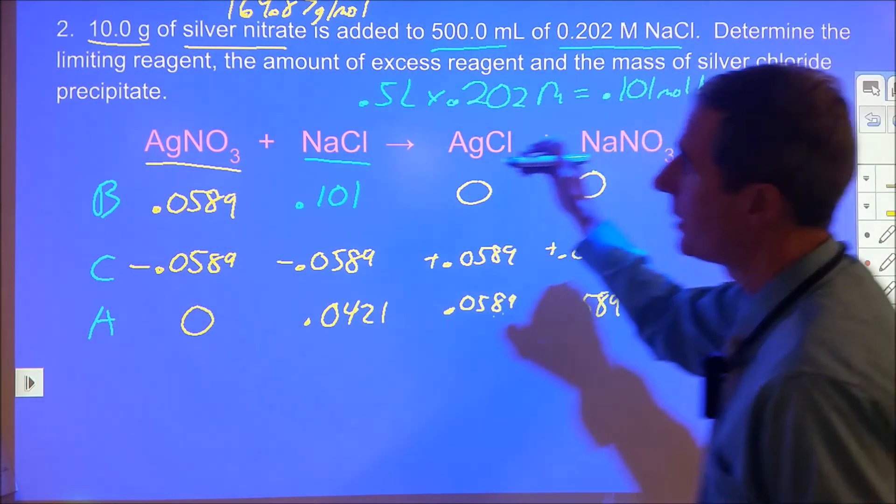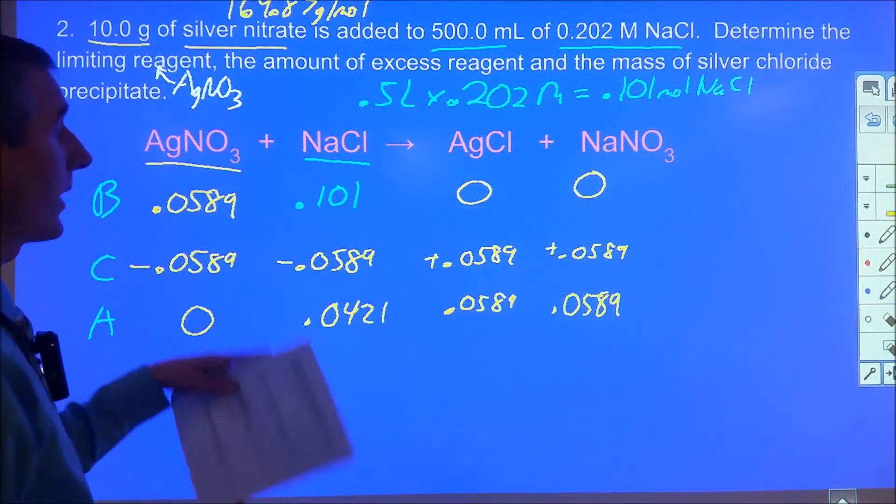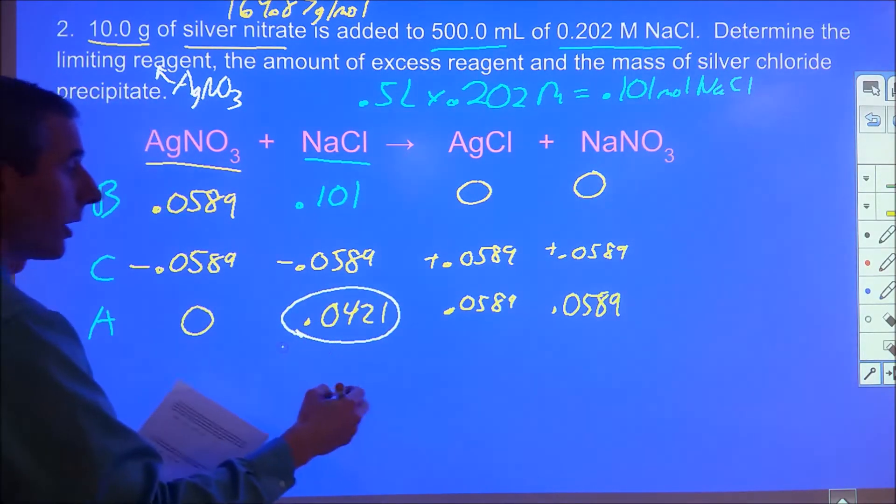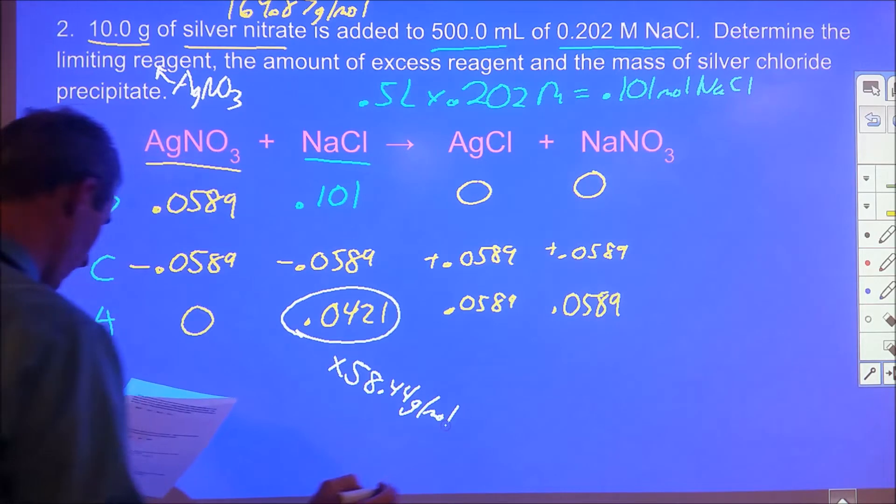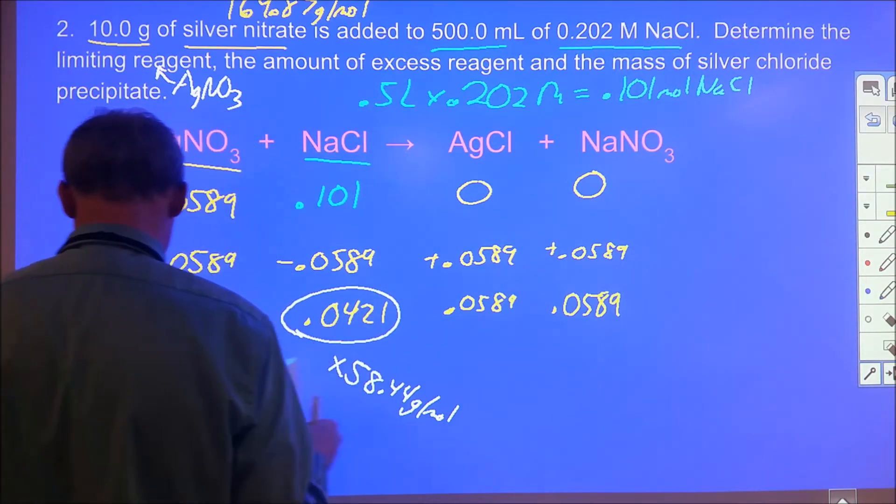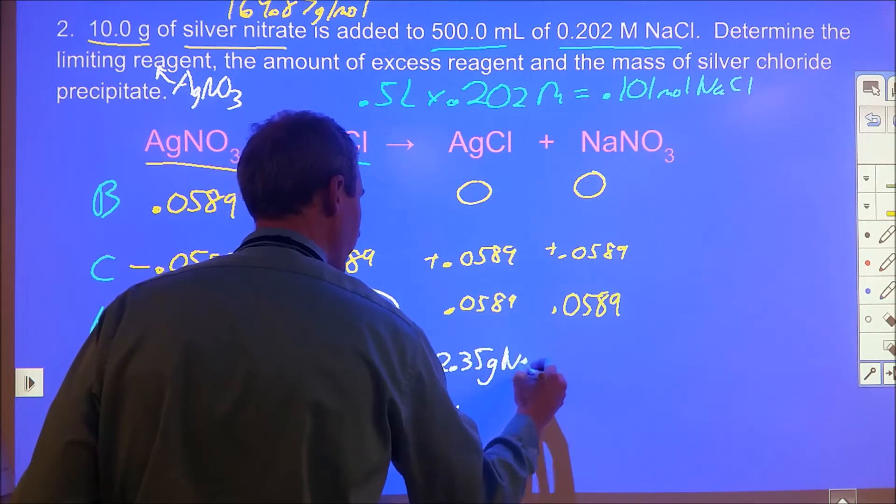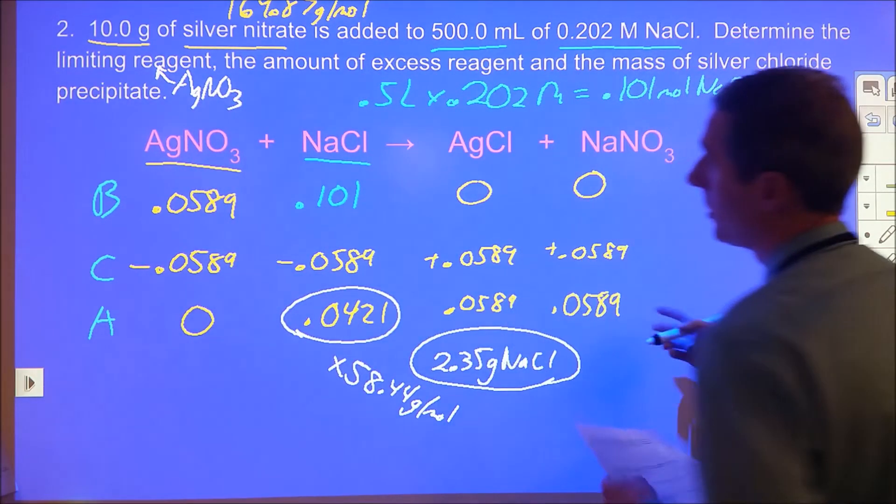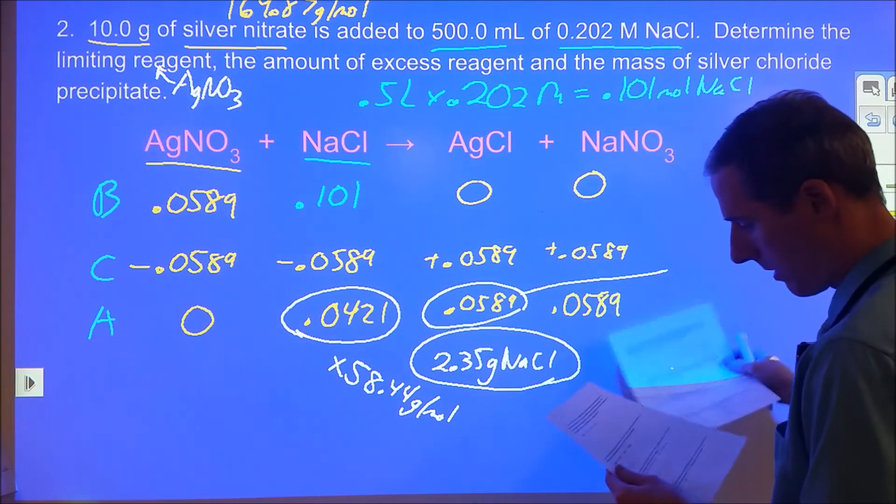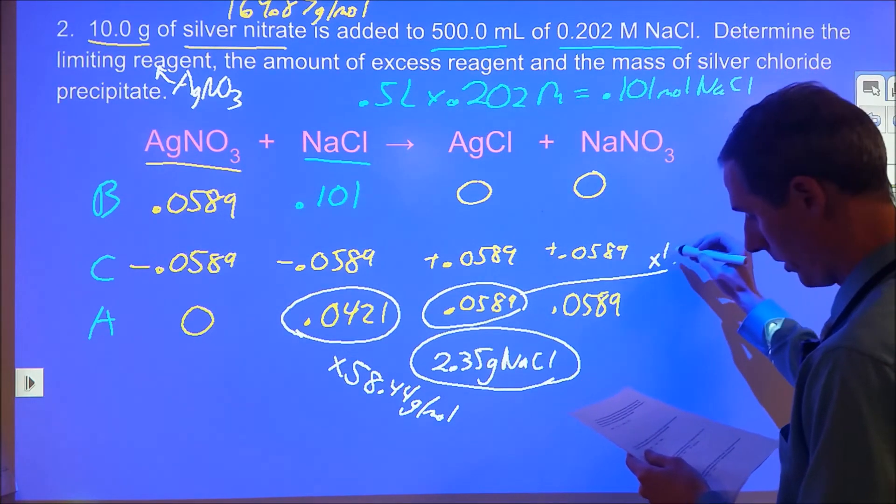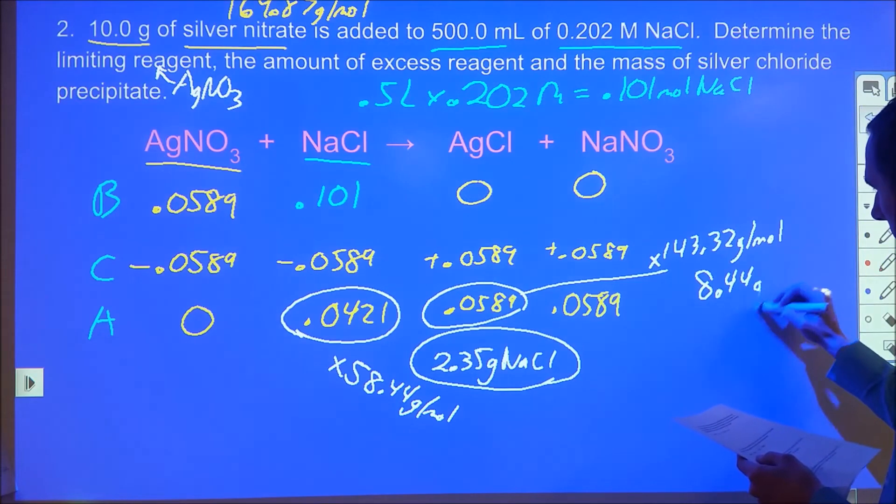The limiting reagent was silver nitrate. The amount of excess reagent is 0.0421 moles of sodium chloride, which is 2.35 grams. For silver chloride produced, we have 0.0589 moles times the molar mass of 143.32 grams per mole, which comes out to 8.44 grams of silver chloride.